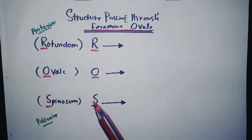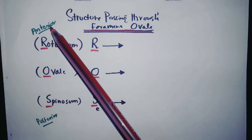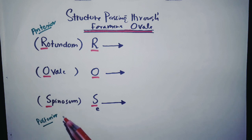R is for rotundum, O is for ovale, S is for spinosum. Why I wrote it like this? Because this is the anterior of the skull and this is the posterior of the skull.